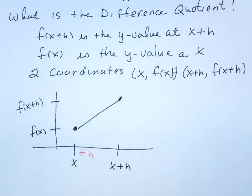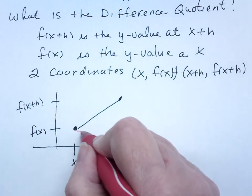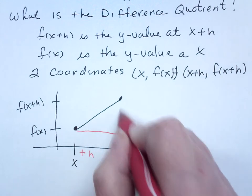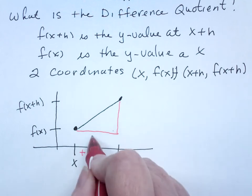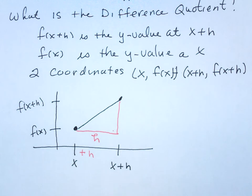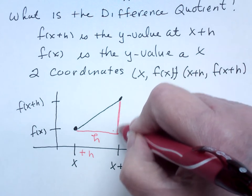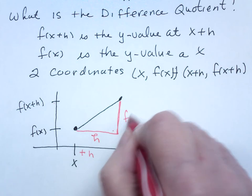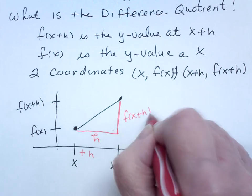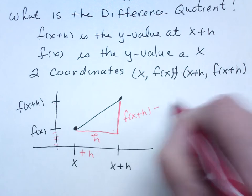And then I draw the line. Now, if I draw my triangle, this distance here is just h because I added h to get to x plus h. This distance here is the long distance, subtract off the short distance.